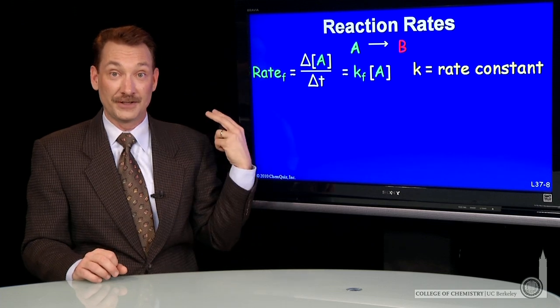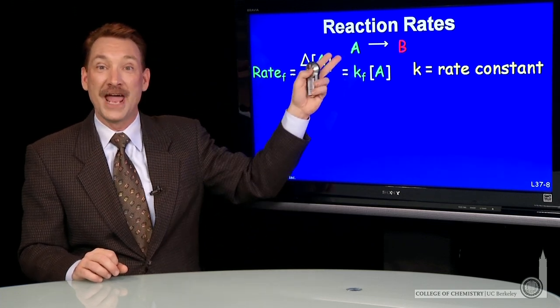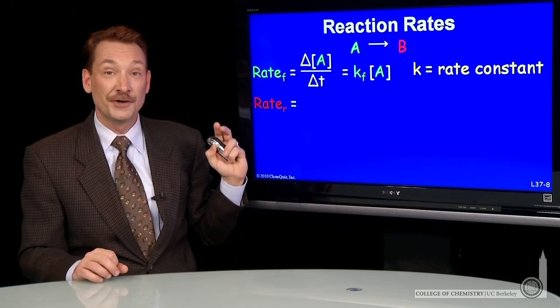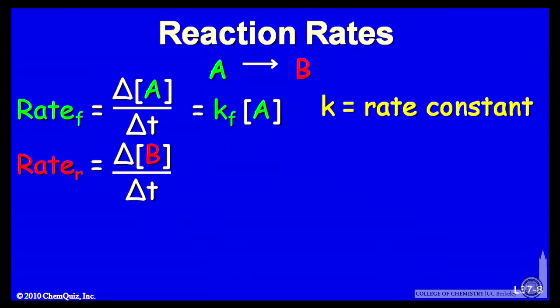The reverse direction, B reacting to form A, I can write the reverse rate as the change in B concentration for a given change in time, and that is the reverse rate constant, Kr, times the B concentration. Both of these first order in kinetics.